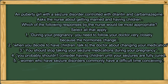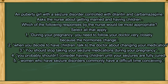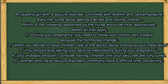A pubescent girl with a seizure disorder controlled with Dilantin and carbamazepine asks the nurse about getting married and having children. Which of the following responses by the nurse would be most appropriate? Select all that apply. 1. During your pregnancy, you need to follow your doctor very closely because your hormones change. 2. When you decide to have children, talk to your doctor about changing your medication. 3. You should stop taking your seizure medications during your pregnancy. 4. You probably shouldn't consider having children until your seizures are fully cured. 5. Women who have seizure disorders commonly have difficulty conceiving.